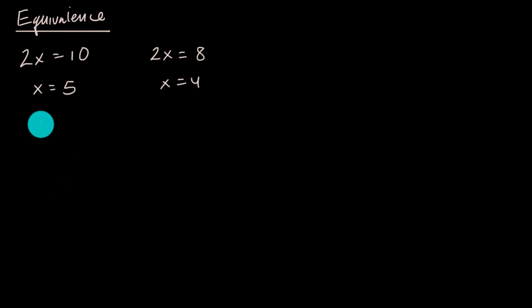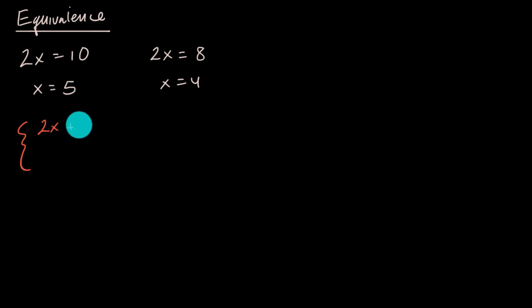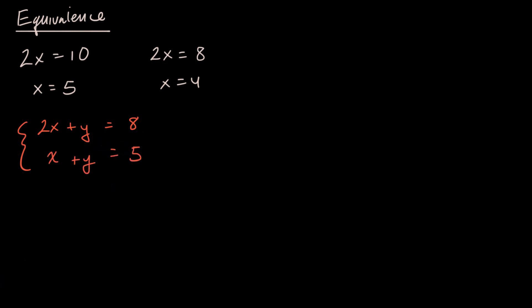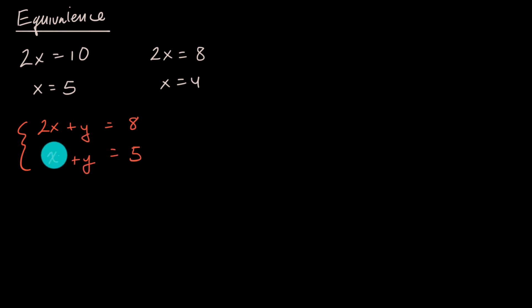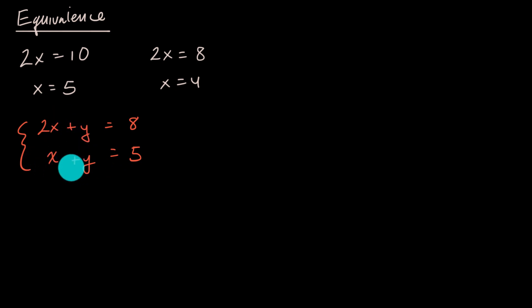Let's give ourselves a system. Say there's some x, y pair where two times x plus y is equal to 8, and x plus y is equal to 5. We can have an equivalent system if we replace either of these equations with an equivalent version. For example, if this second equation had a negative 2x, maybe we could eventually add the left sides — and we'll talk about why that is an equivalence-preserving operation.